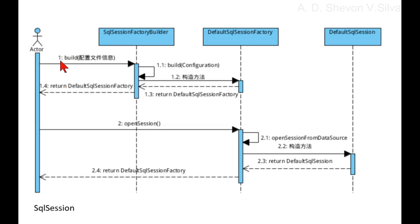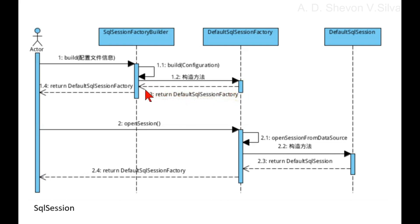Here you can see an actor, the SQL Session factory builder, the default SQL Session factory, and the default SQL Session. The SQL Session factory builder is connected to the default SQL Session factory via build configuration. Then the default SQL Session factory is returned to the SQL Session factory builder, which in turn returns the default SQL Session factory to the actor.